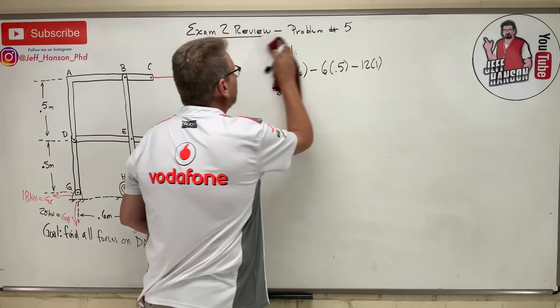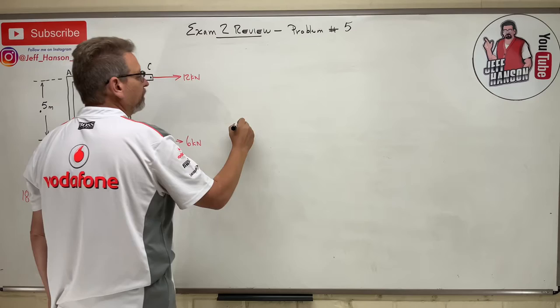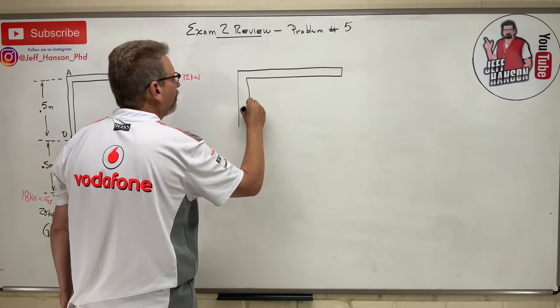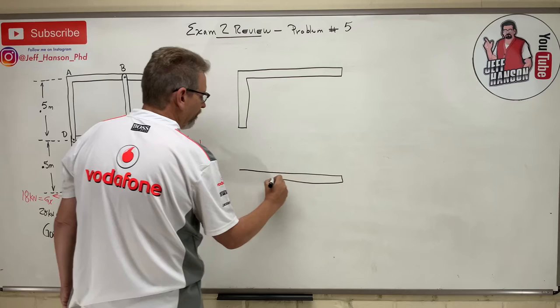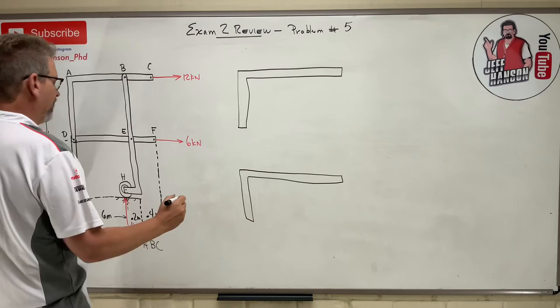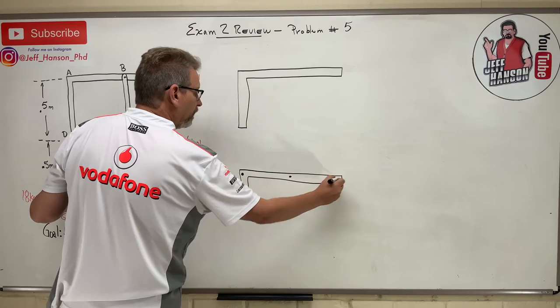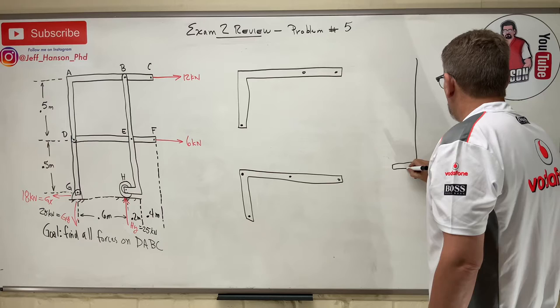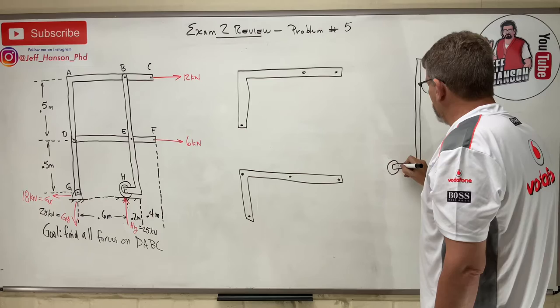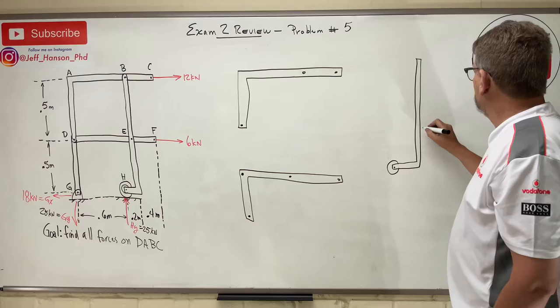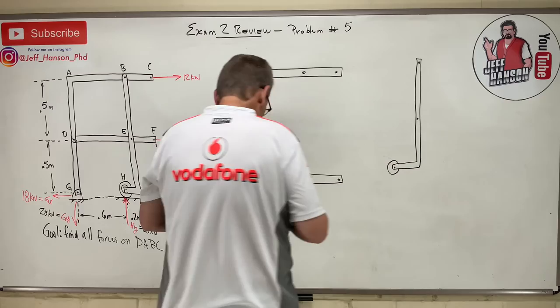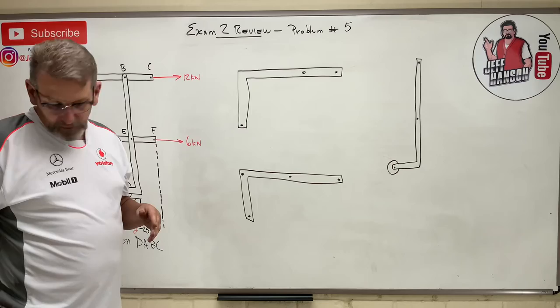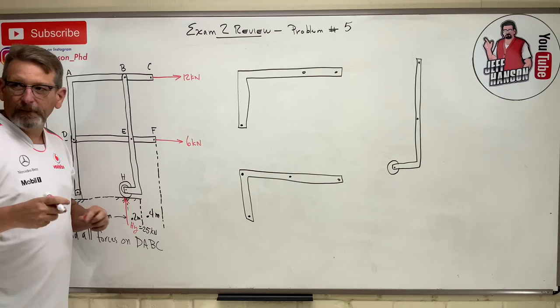Next step: take it apart — break it into pieces. Let's erase the global equilibrium to give us room. Here's piece number one, piece number two — this one has four connection points, the other has three. There's one more piece with a pulley or wheel; just leave it on there. That piece has connections at one point here and one there. Now put some arrows on it — pause and come back to see if you get the same thing.